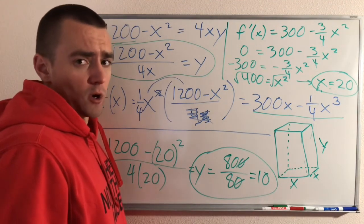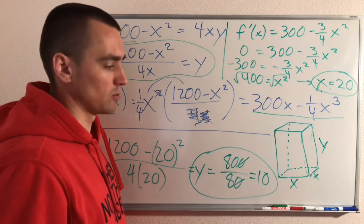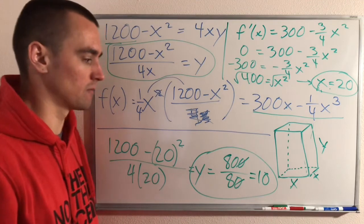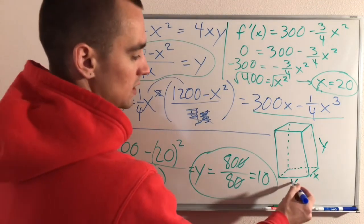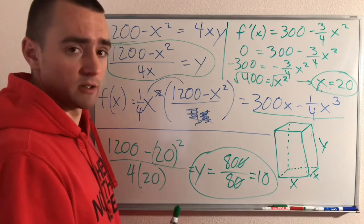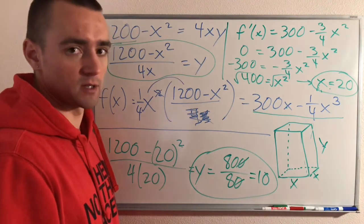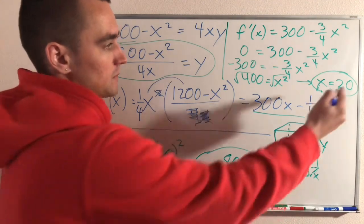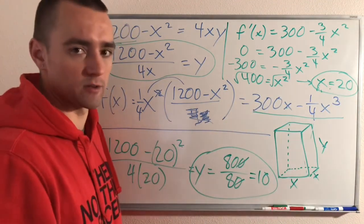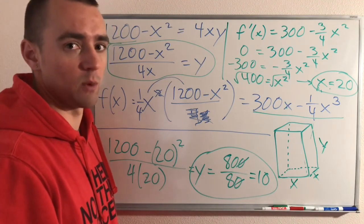But remember, what the question asked us was to find the largest possible volume. So what we need to figure out is the actual volume. If we have 20 by 20 by 10, we multiply all those together: 20 times 20 is 400, times 10 gives us 4000 cubic centimeters. So that would be the maximum volume of the box — 4000 cubic centimeters.